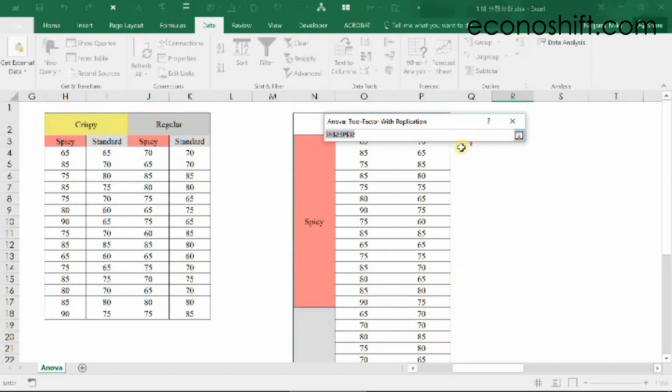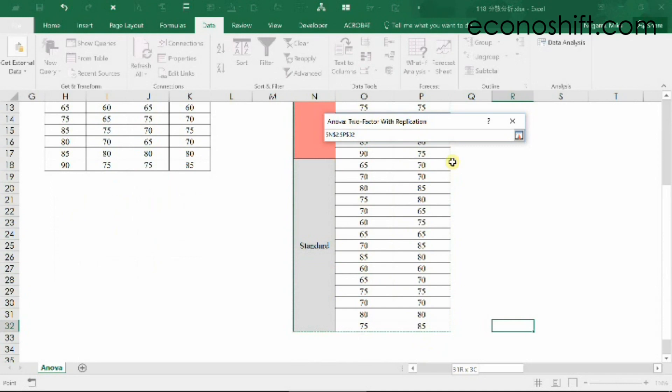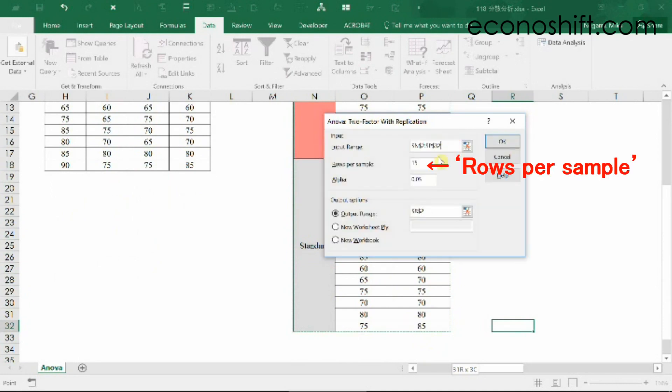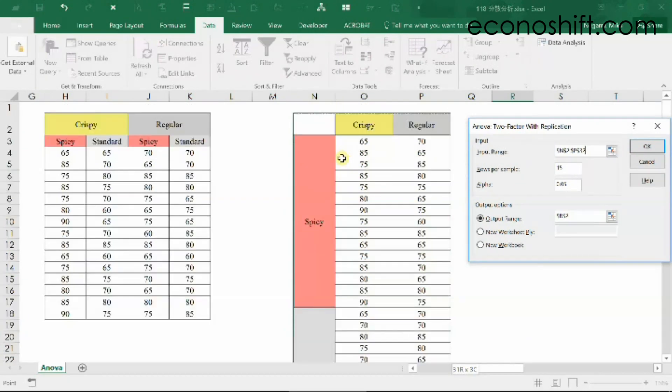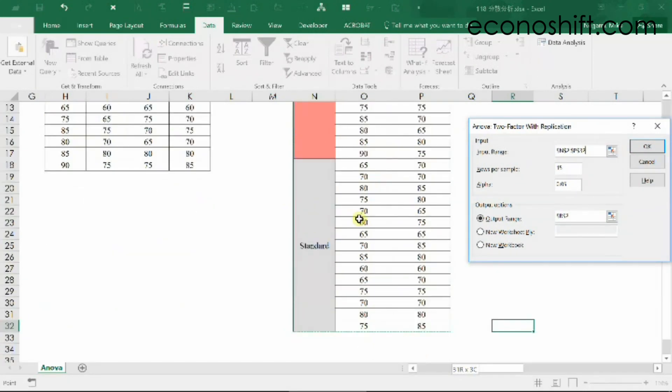For the input range, select your data range including the column names and row names. For the rows per sample, since there are 15 rows for spicy and standard, I'll put 15 there.